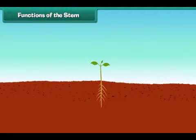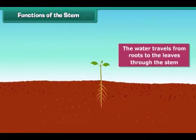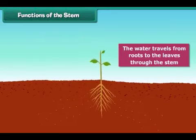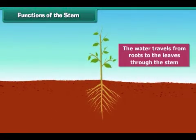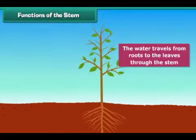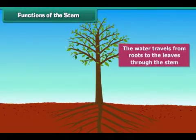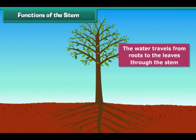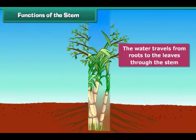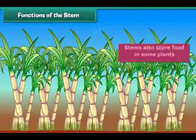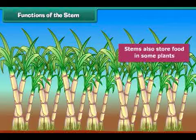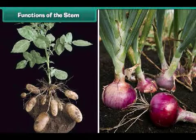Now let's focus on the main functions of stem in plants. The water taken in by the roots of the plant travels to the leaves through the stem. This water is used by the leaves to make food. The stem also carries food made by leaves to all parts of the body. Sometimes the food made by the leaves is stored in the stem, as in sugar cane. Other examples are potato and onion — we eat these stems and get nutrition.